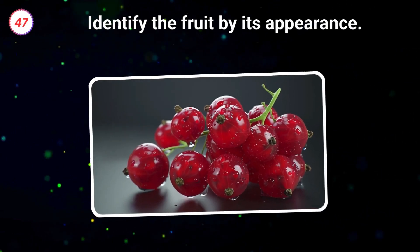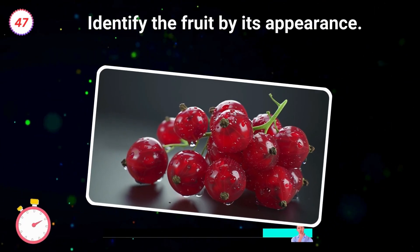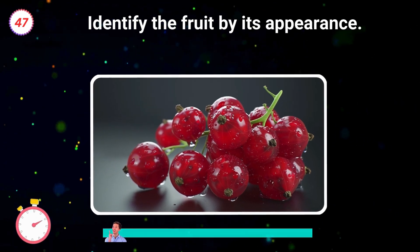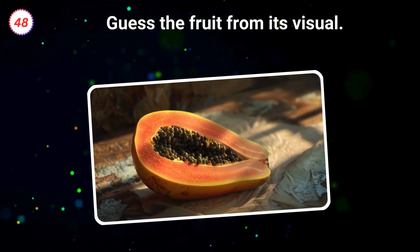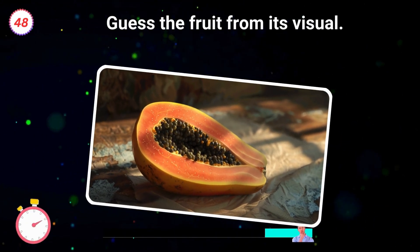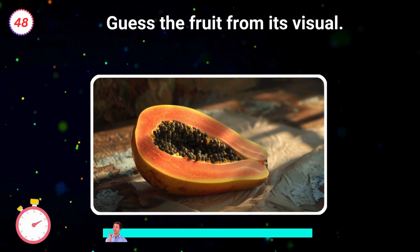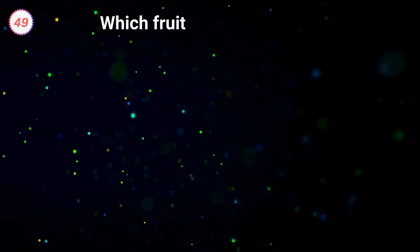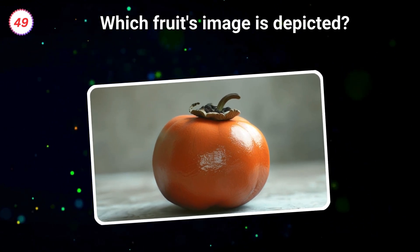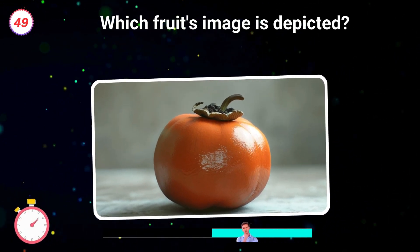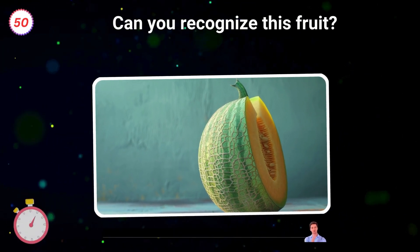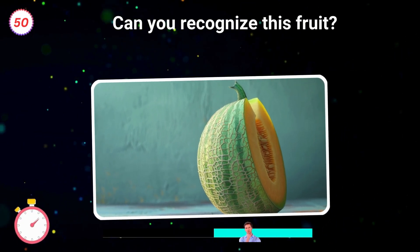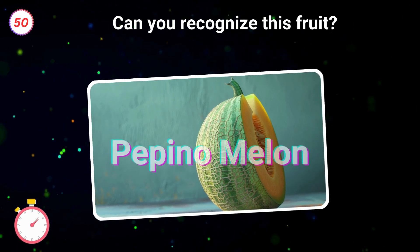47. Identify the fruit by its appearance. Currant. 48. Guess the fruit from its visual. Pawpaw. 49. Which fruit's image is depicted? Persimmon. 50. Can you recognize this fruit? Pepino melon.